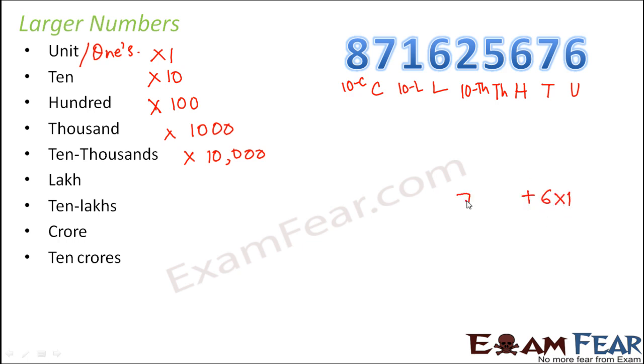What about seven? Seven is multiplied by ten. Six is multiplied by hundred. Five is multiplied by thousand. Two is multiplied by ten thousand. Six is multiplied by hundred thousand.